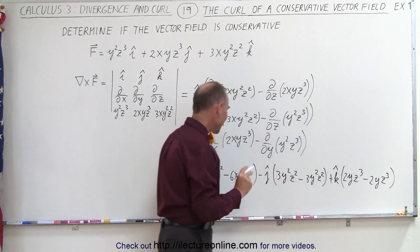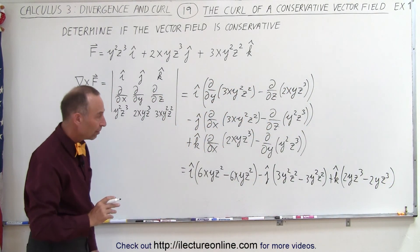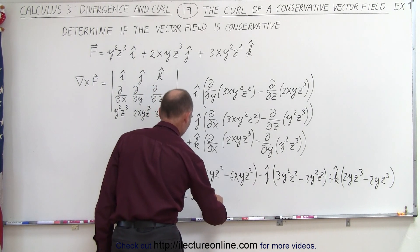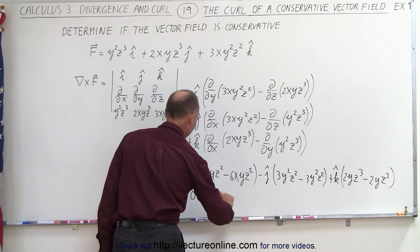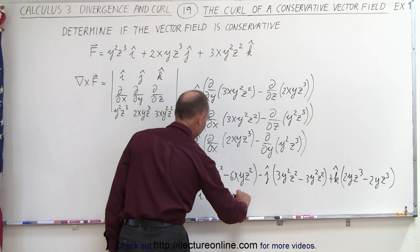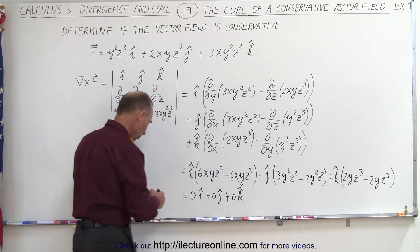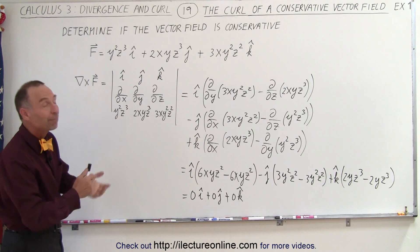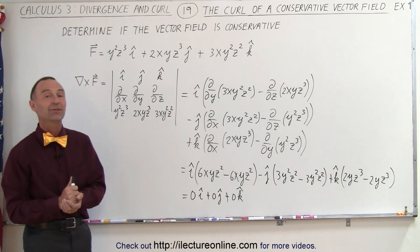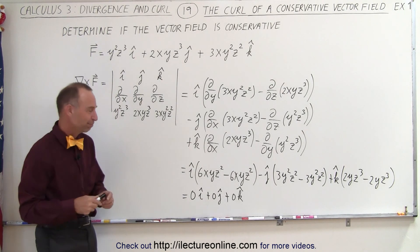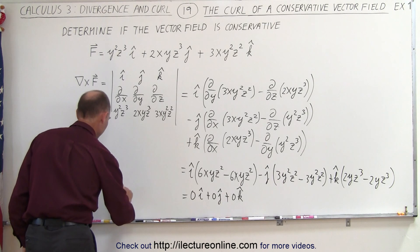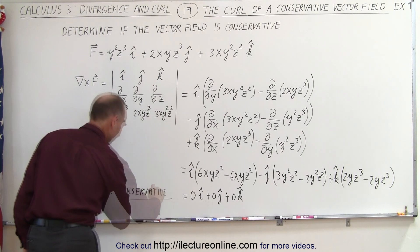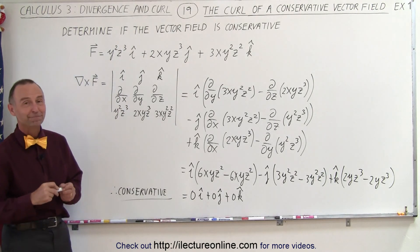In each case, the components cancel out, giving us 0 in the i direction, 0 in the j direction, and 0 in the k direction. Since the curl of the vector field equals 0, the vector field must be conservative. Therefore, it is conservative — and that's how we do it.